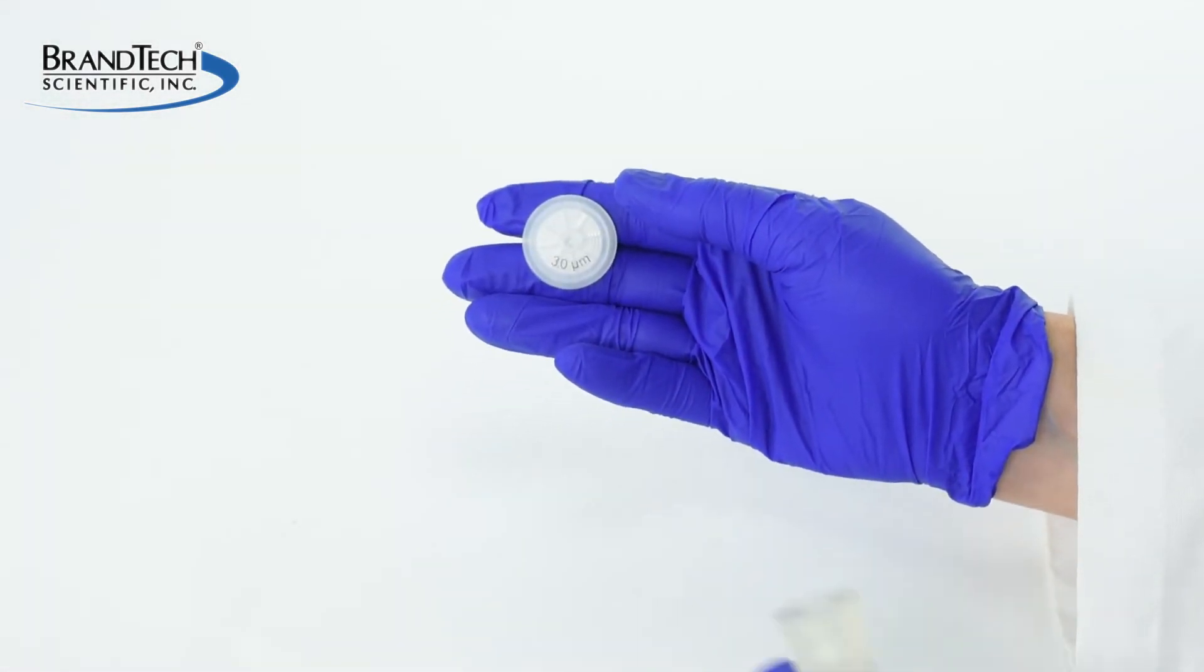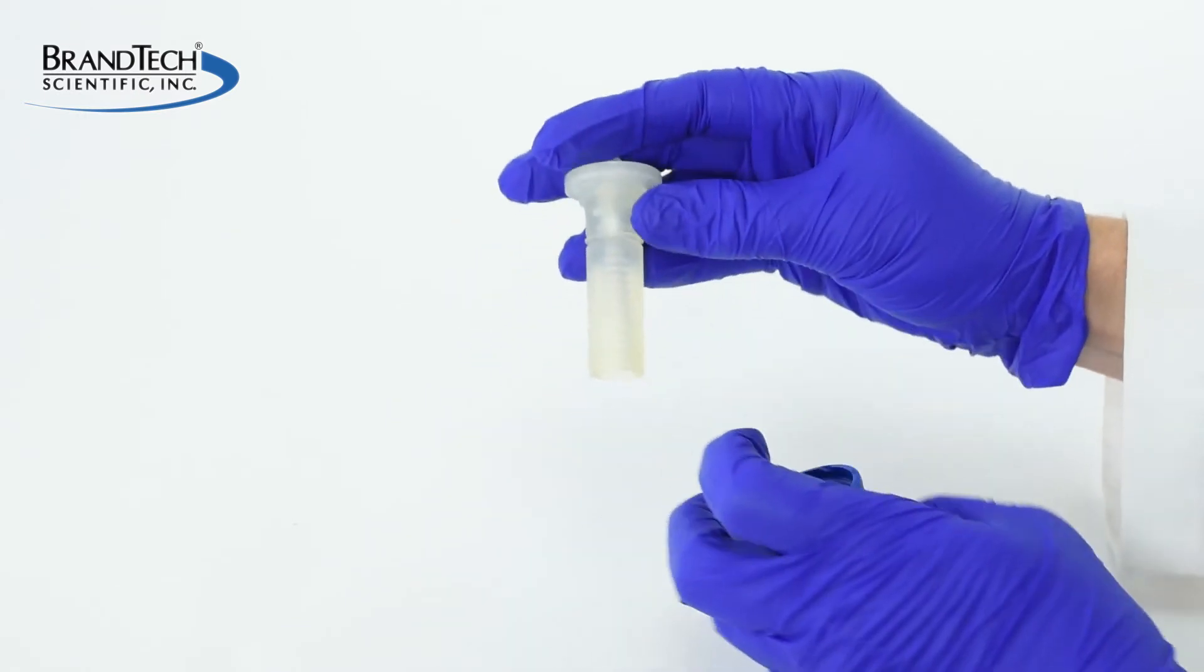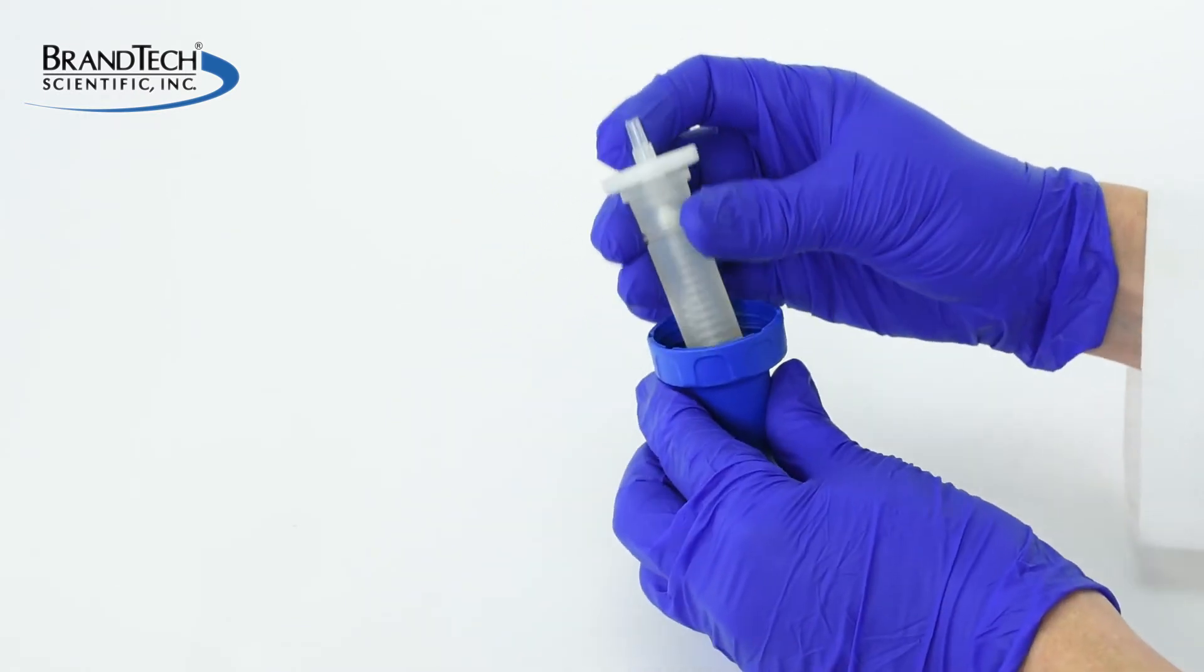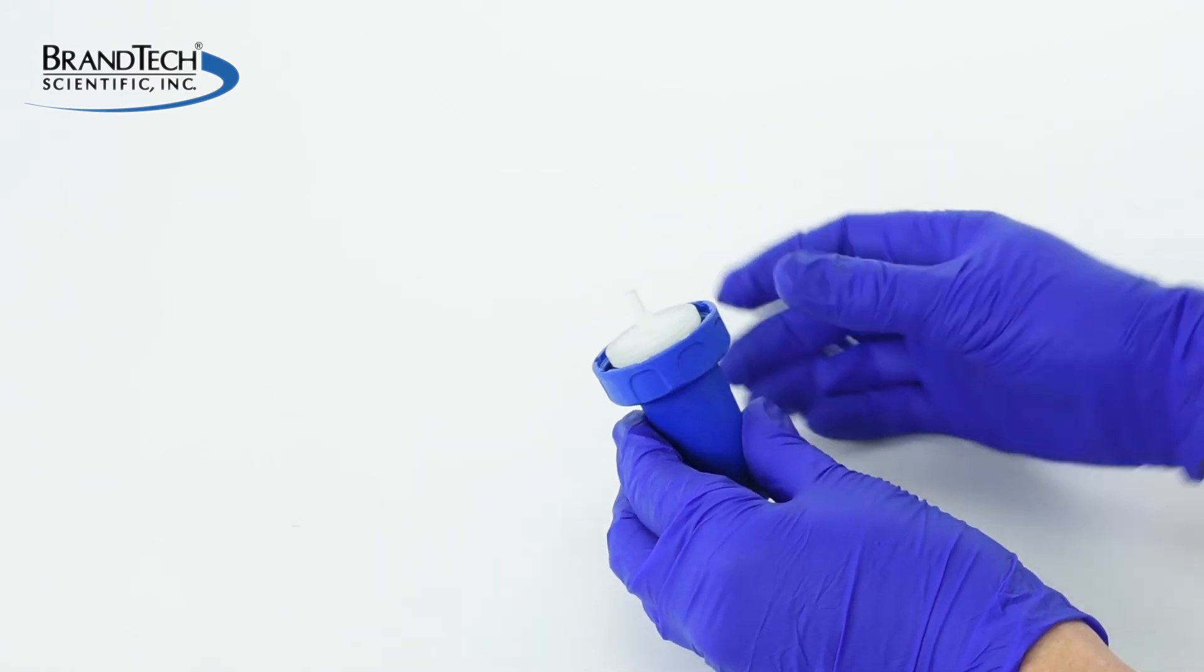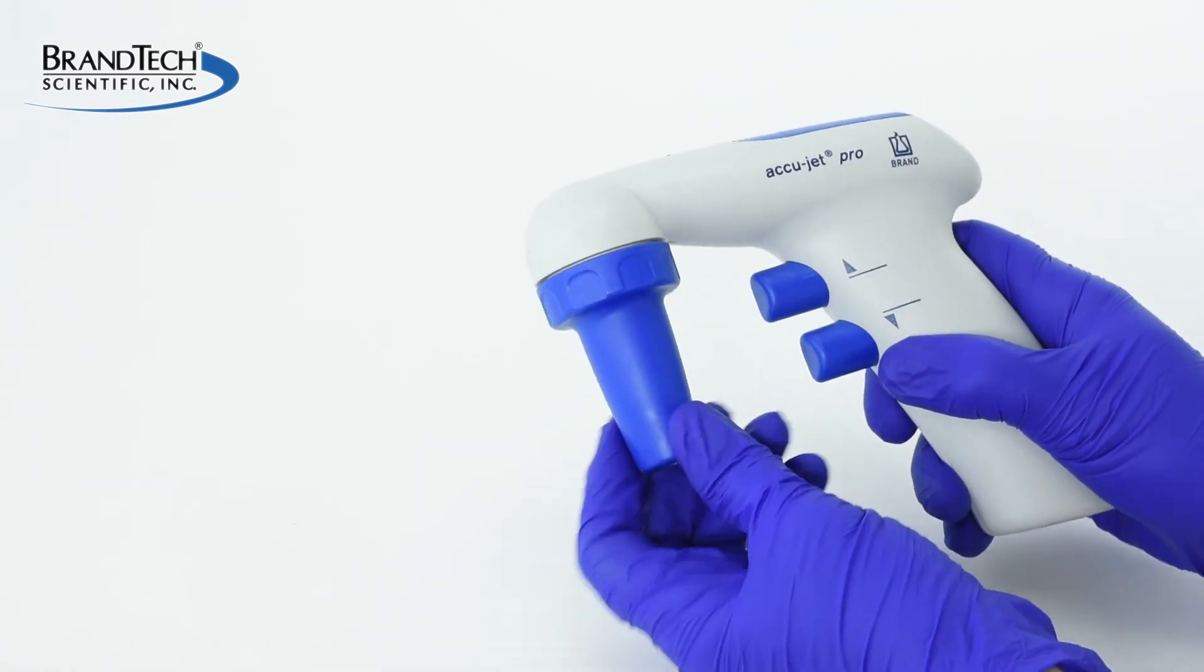To install your filter, grasp the filter and push the wider fitting into the silicone adapter. The thinner fitting should be visible. Then insert the silicone adapter into the adapter holder and screw it into the body of the AccuJet.